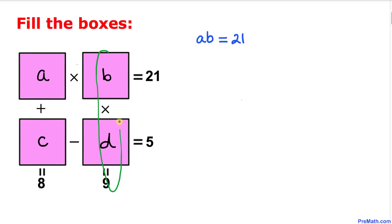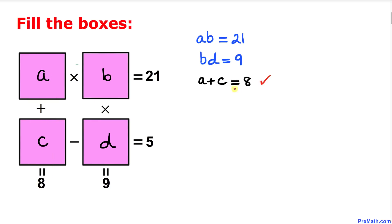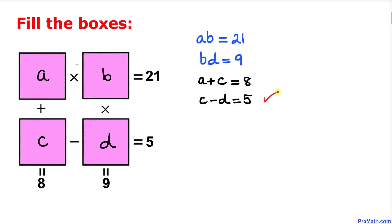Likewise, let's multiply B times D equals 9. Here I have copied down B times D equals 9. Now let's add vertically: A plus C equals 8. And finally, let's subtract horizontally: C minus D equals 5.